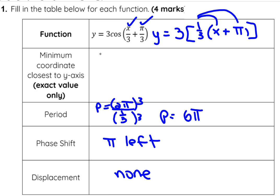Let's look at our mapping notation to determine our minimum coordinate. For x and y, on the outside vertically I just triple it. Horizontally, I'm stretching it by a factor of 3 and then moving it π units to the left.